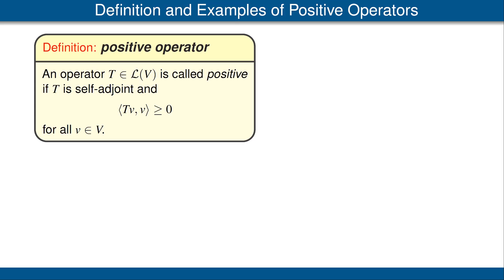Recall the analogy discussed earlier between the vector space L(V) of operators on V and the set C of complex numbers. One way this analogy appears is through the behavior of the inner product of T(v) with v. The definition requires that inner product be greater than or equal to 0, so we should actually call this a non-negative operator rather than a positive operator to make the analogy perfect. However, the terminology 'positive operator' has become standard, so we will stick with that. Another terminology you may hear is 'positive semidefinite,' which means exactly what we are calling positive here.